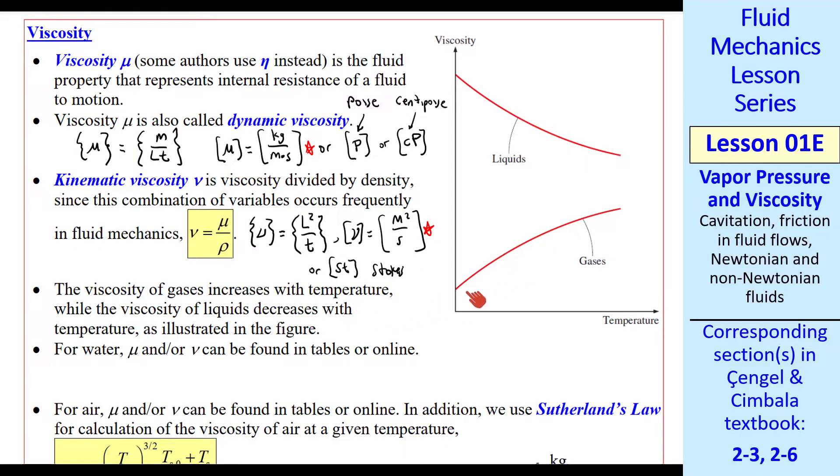As you can see in this plot, the viscosity of gases increases with temperature, as you see here, whereas the viscosity of liquids decreases with temperature. Also, mu of a liquid is typically much greater than mu of a gas, as also seen in the figure.